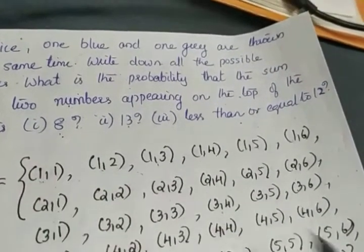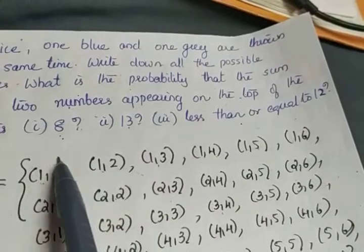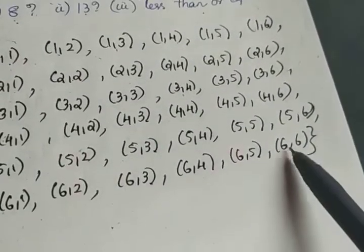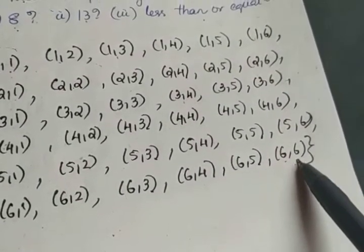From the list itself, it is clear that this will be the least sum. 1,1. What is the least sum possible? 1 plus 1 is 2. And this will be the bigger sum. And what will be the bigger sum possible? 6 plus 6 is 12.